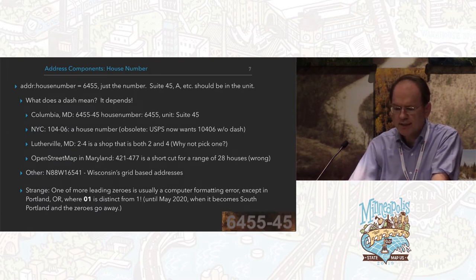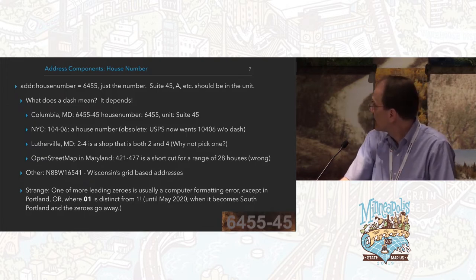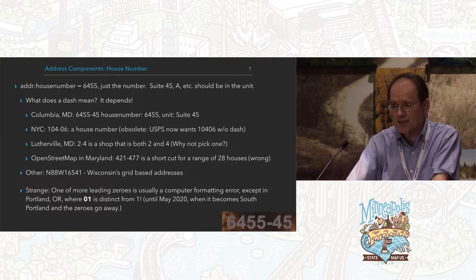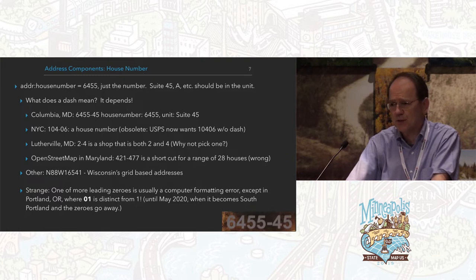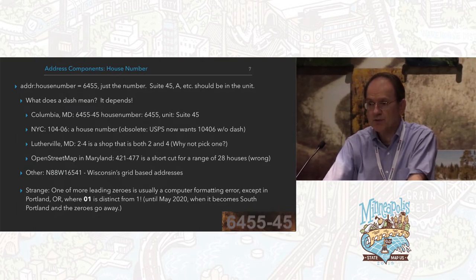More on address components — the house number. For example, if you look at the picture in the bottom right, 6455-45. What does the dash mean? Anything you want, apparently. In this case it's a suite number. In Columbia, Maryland, which is near where I live, and in New York City, it's a single house number that is no longer designated by the Postal Service, but a lot of people still use them. In Lutherville, not far from my office, there's a 2-4.